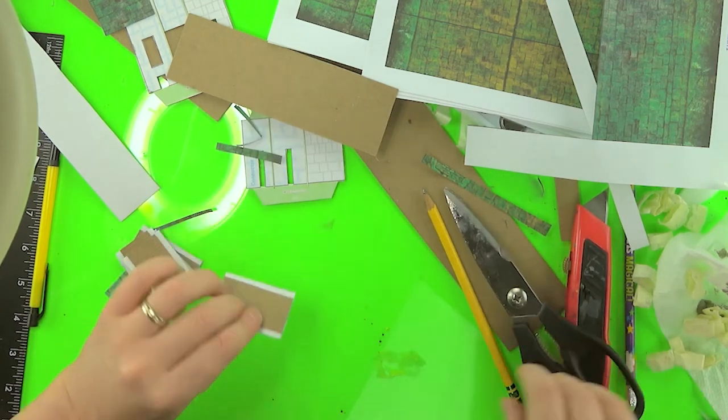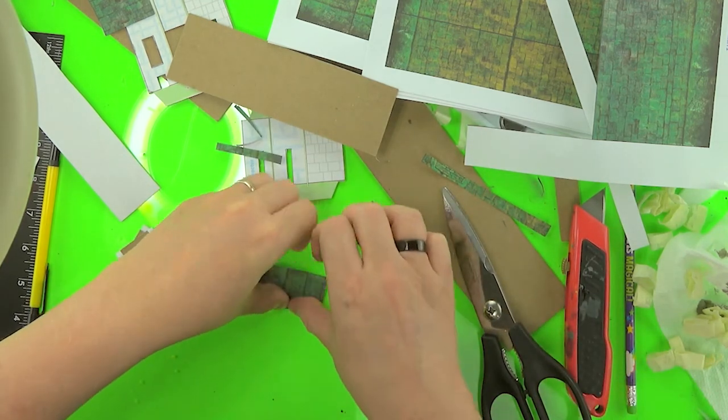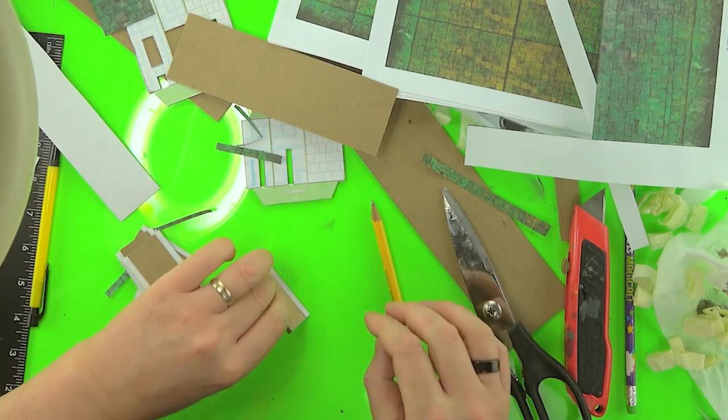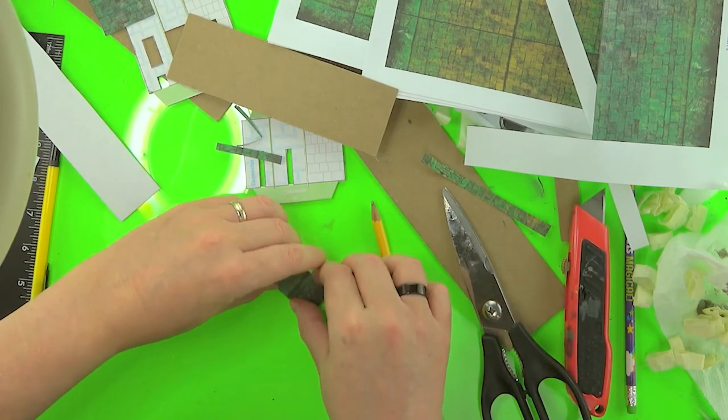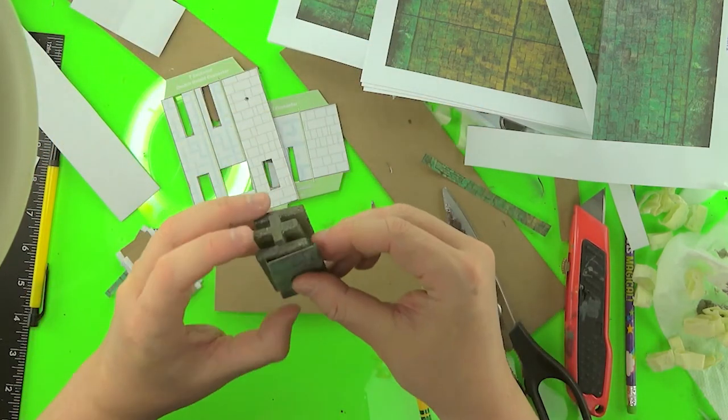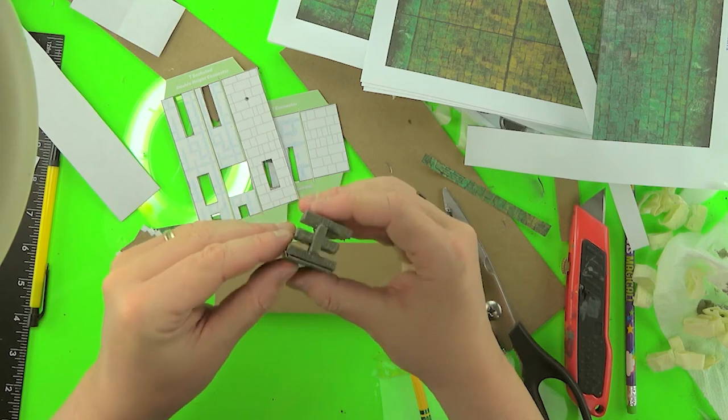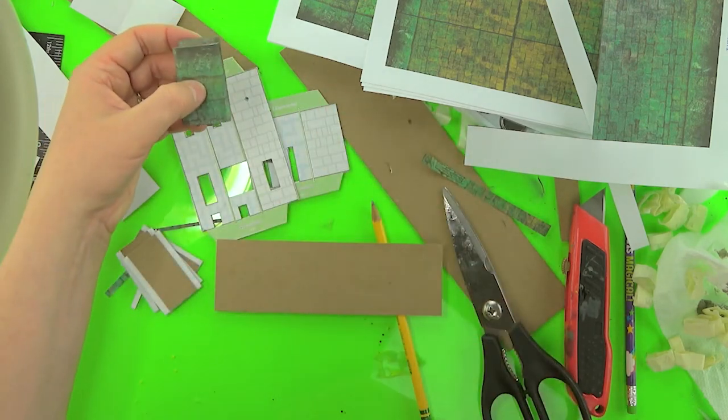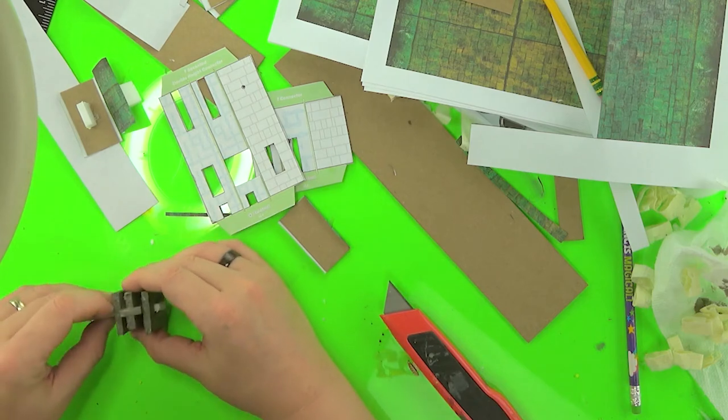Once you've got them cut out, you just fold over the parts of the printout that are hanging past the cardboard. Now you're going to use a socketed connector to set the position of the actual socket plug. Just grab a strip of foam board that's the size of the socket.